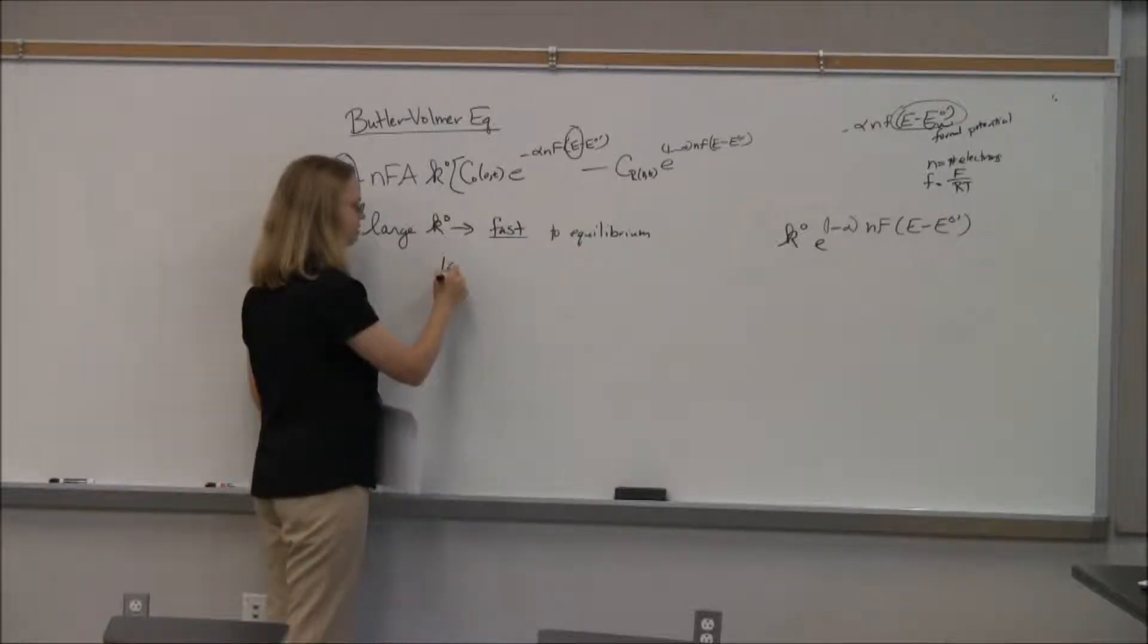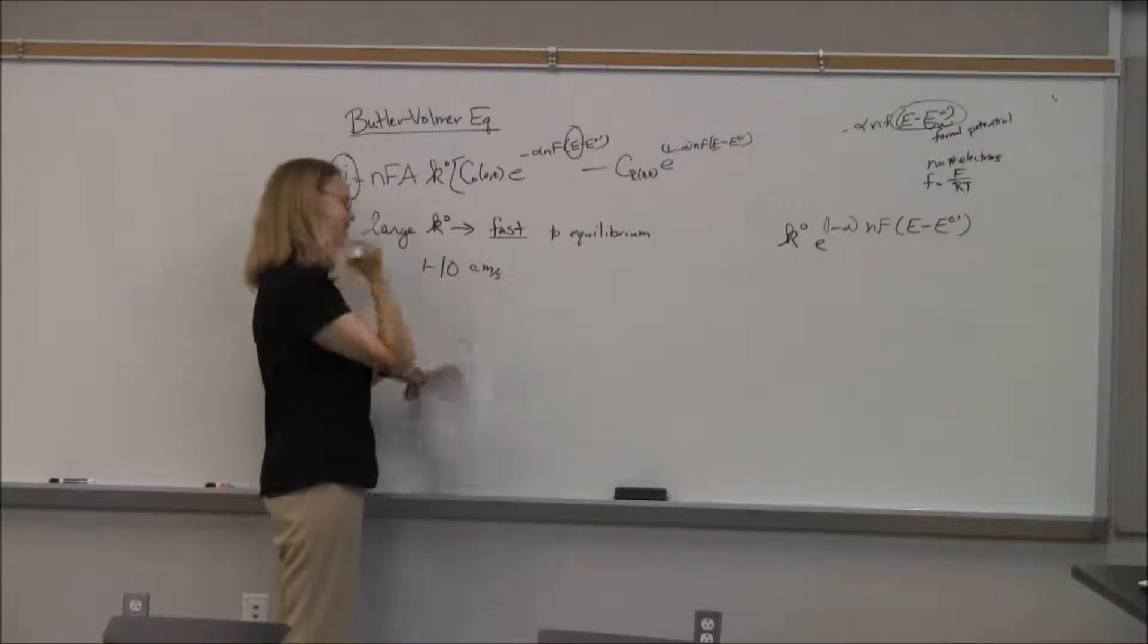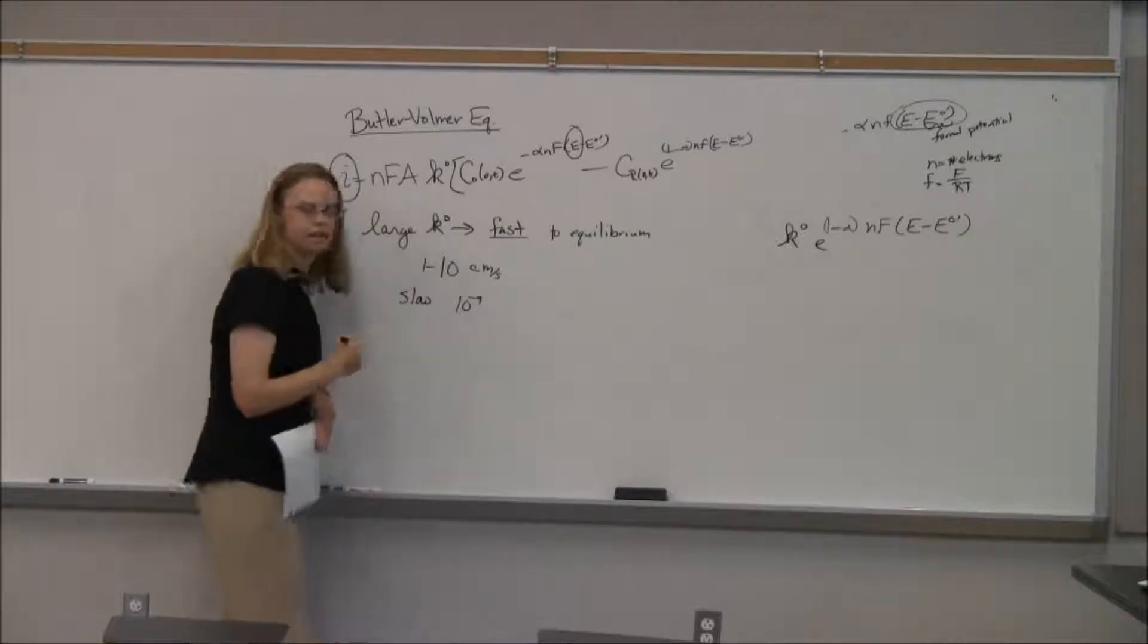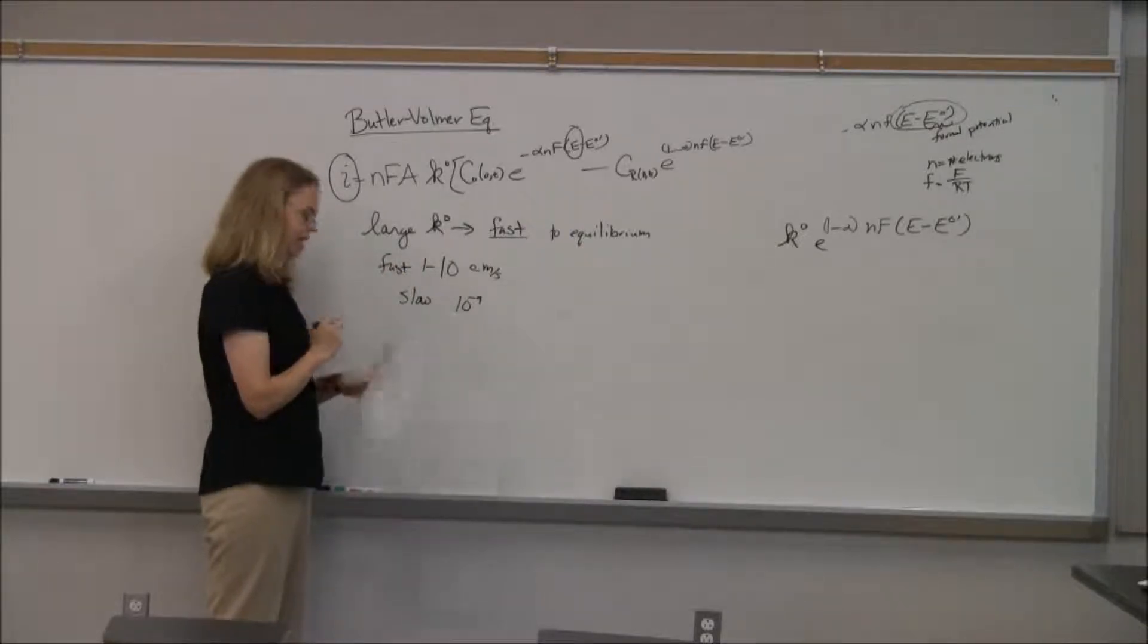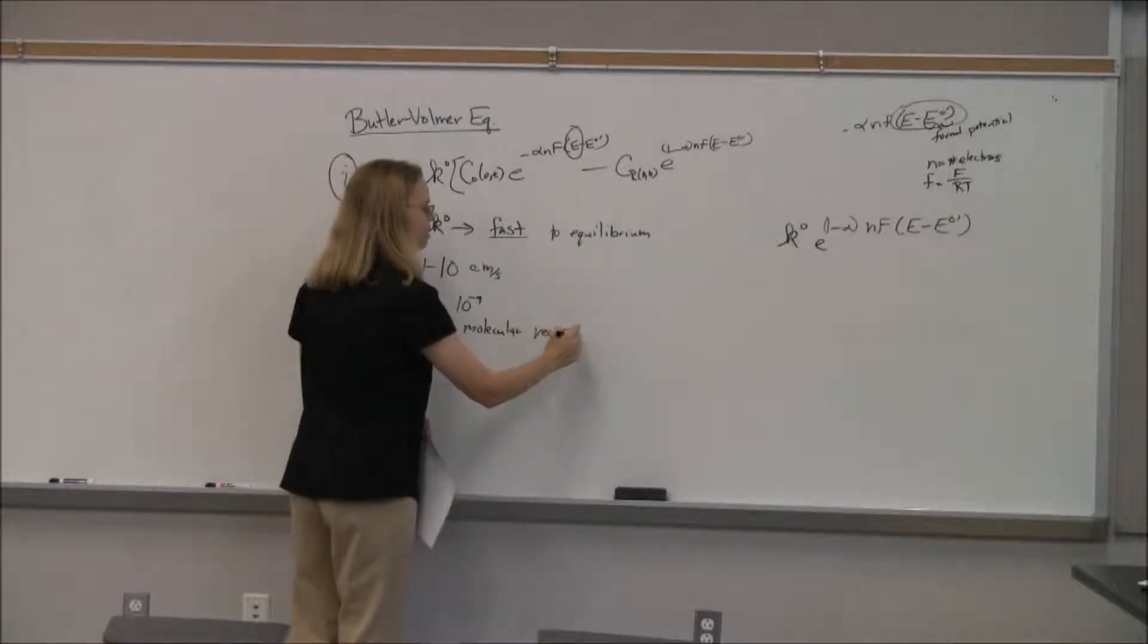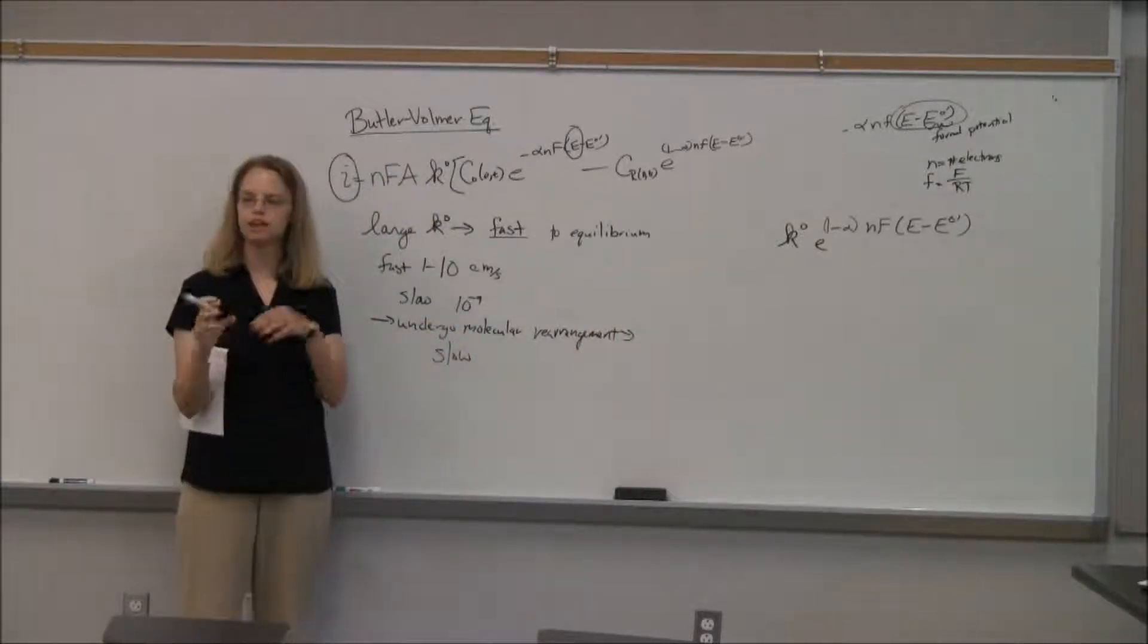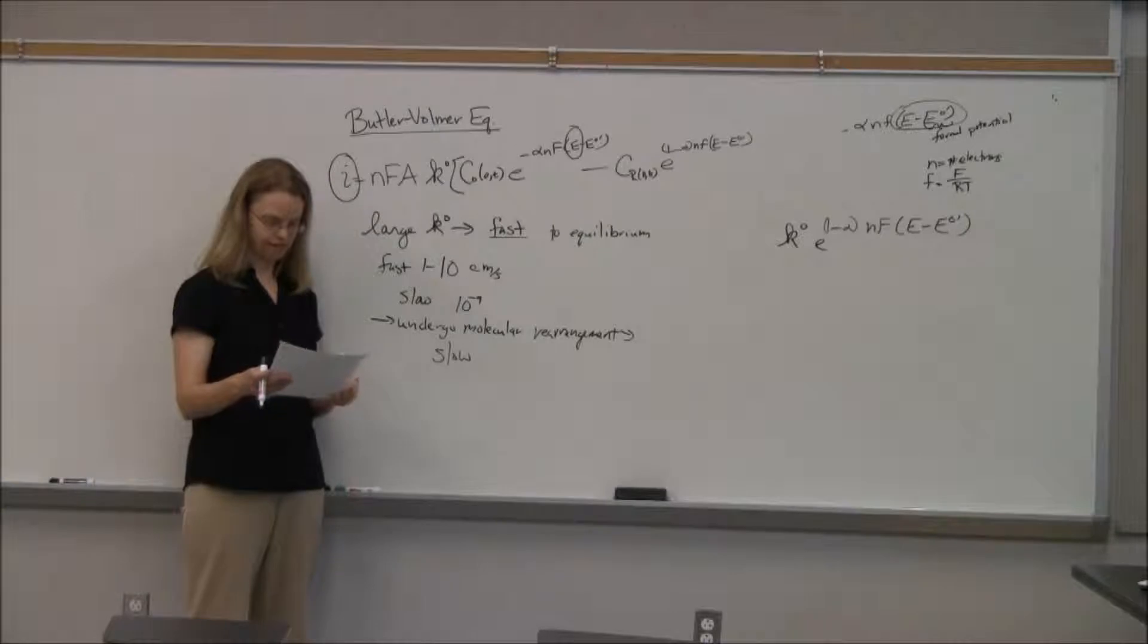So let's think about this for a minute. What does it mean if you have a large K0? Are you going to be fast or slow to equilibrium? Fast or slow to equilibrium? What does that mean? Fast. Fast, so you have a large rate constant. That means you go screaming fast. So that means you're fast on your way to equilibrium. So a fast rate constant, then it's somewhere in the order, maybe 1 to 10 with maybe 10 to the minus 1 centimeters per second.